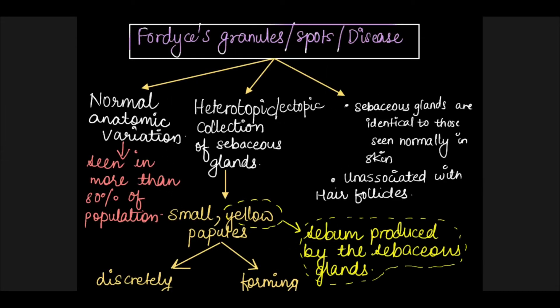In today's video we're going to talk about Fordyce granules, Fordyce spots, or Fordyce disease. This is not really a disease of the oral mucosa as the name might suggest, but it's actually a developmental anomaly characterized by a heterotopic or ectopic collection of sebaceous glands in the oral cavity. During the development of the maxillary and mandibular processes, there may have been an inclusion of the ectoderm, which has the potential to give rise to skin in the oral cavity.